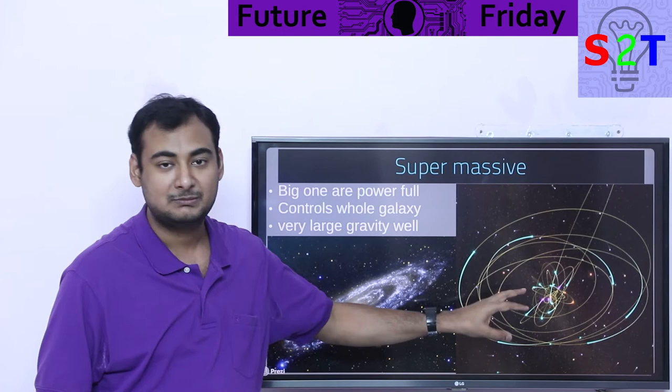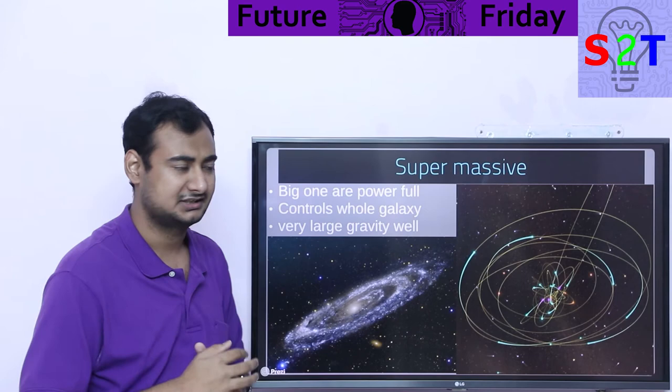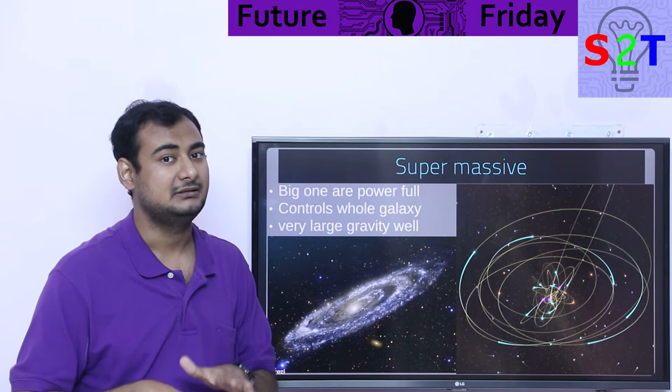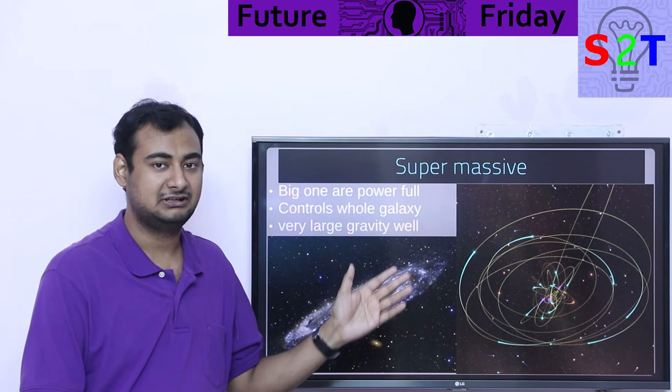Supermassive black holes are present in almost every galaxy's center, unless it's a very tiny galaxy. All big galaxies we know have a center with a supermassive black hole handling everything. Because of their super large size, they are stable. The bigger they get, the more stable they become and the longer life they get. They can literally outlive their own galaxy itself.